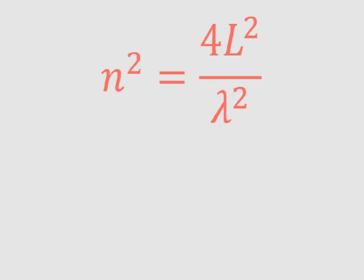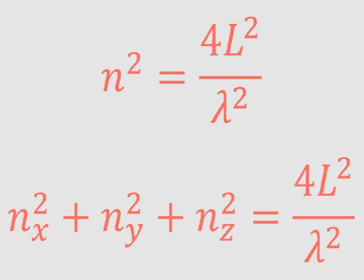So since we're dealing with three-dimensional waves, we have to change this equation. Instead of just one term on the left, we'll have three, one for each of the three dimensions. One thing that's really not obvious is that n, the number of half waves, can be different in each of the three dimensions. So we need to make sure those three n's are three different symbols, nx, ny, and nz. You might wonder how n could be different in those three dimensions. It's hard to picture in 3D. So let's look at a 2D example.